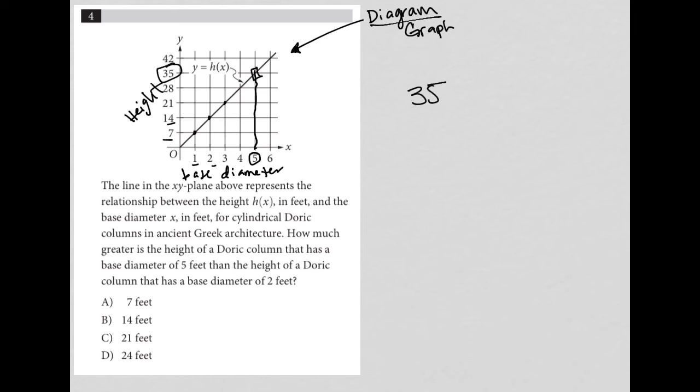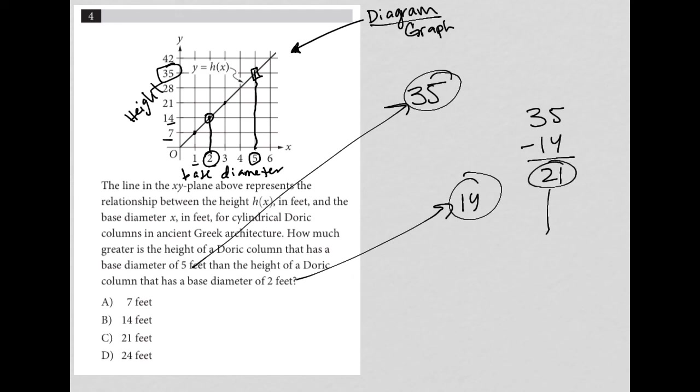So how much greater is the height of a Doric column that has a base diameter of 5, that's 35, than the height of a Doric column that has a base diameter of 2? If you have a base diameter of 2, you're at 14. So how much greater is 35 than 14? Well, it's just 35 minus 14, which is 21. So our answer here must be choice C.